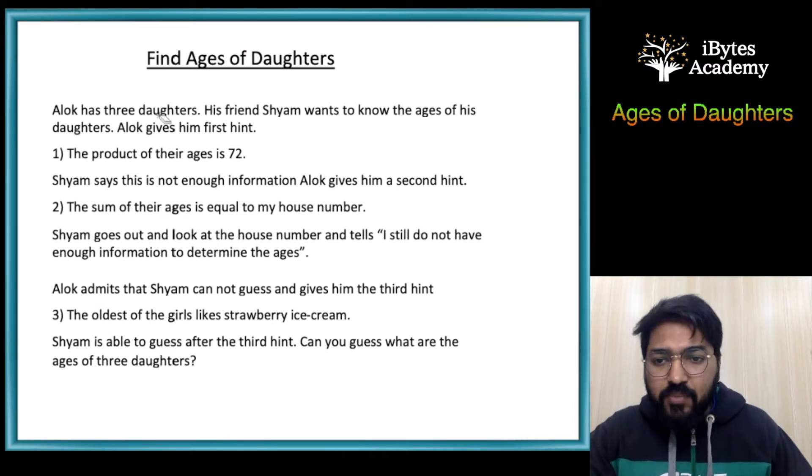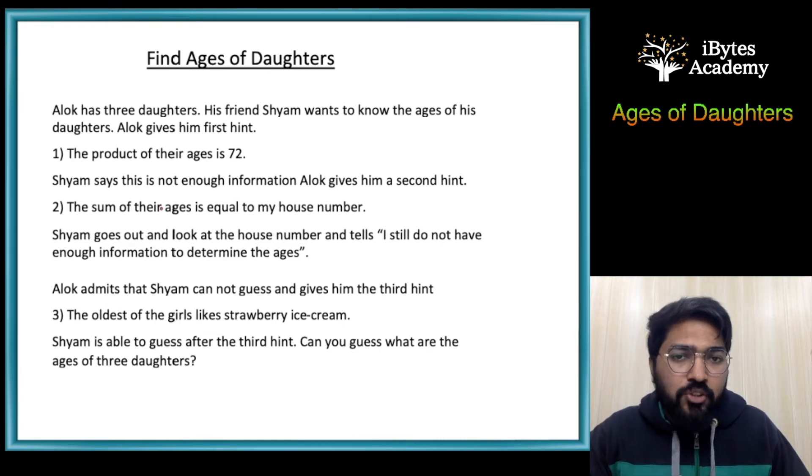The puzzle is: Alok has three daughters. His friend Shyam wants to know the ages of his daughters. Alok gives him hints one by one.